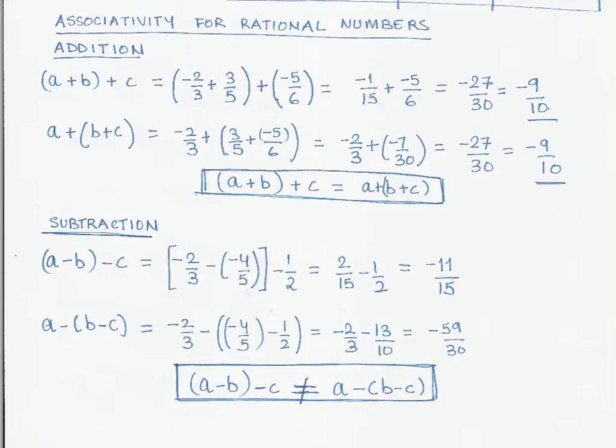Okay, so now let us look at trying to prove the associativity for rational numbers under the different operations. So let us take addition first.